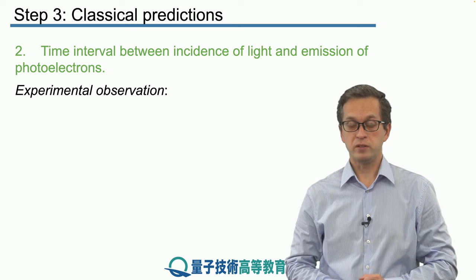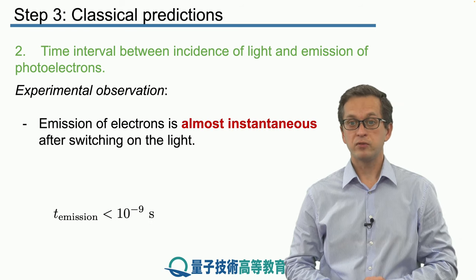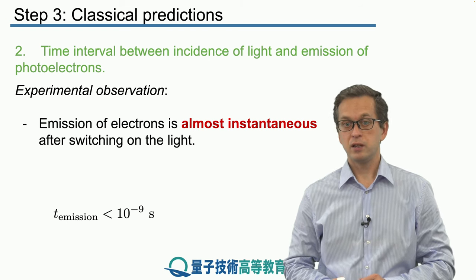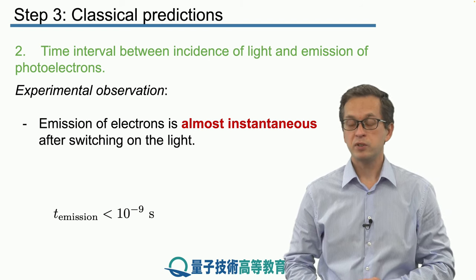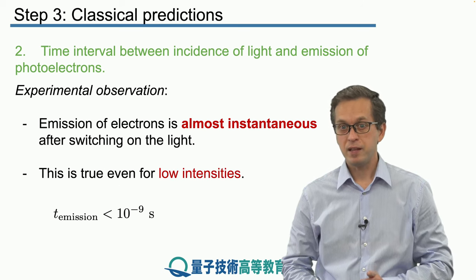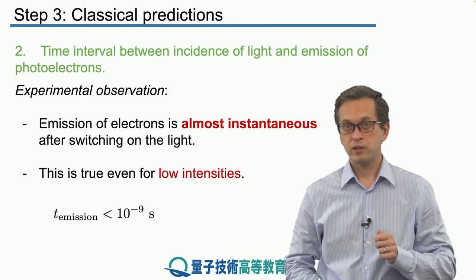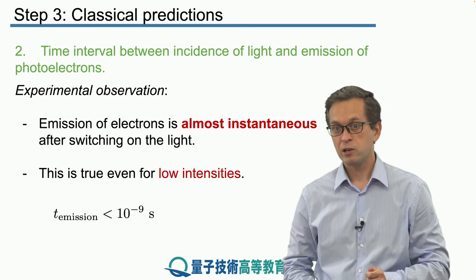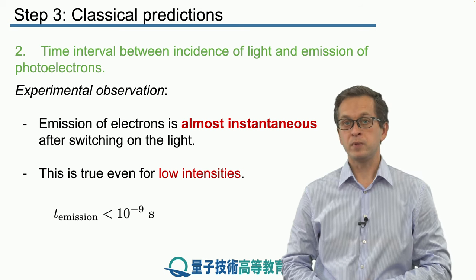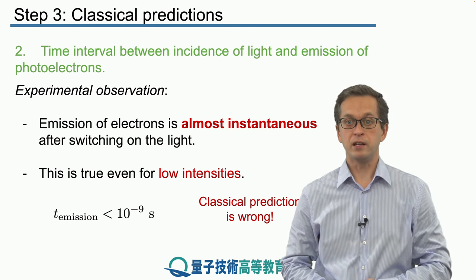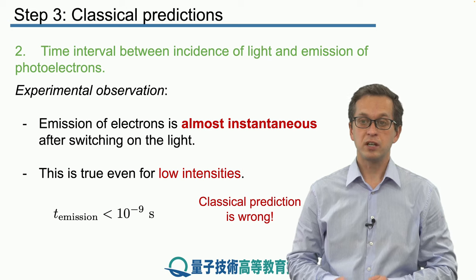Experimentally, what do we observe? In fact, we observe that the emission of electrons is almost instantaneous after switching on the light. The measured time of emission is of the order of a nanosecond or less, and this is independent of the intensity. So even when we turn the intensity of the incident light very, very low, electrons are still being emitted almost instantaneously. This is a surprising fact. So again, our classical prediction is wrong.